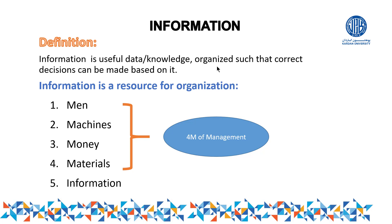One important thing: sometimes the same thing can be information for one person and data for another. For example, information provided by the finance or accounting department is information for accounting people, but the same thing might be raw data for the HR department. Data can be called information only when it becomes useful to you and increases your knowledge.